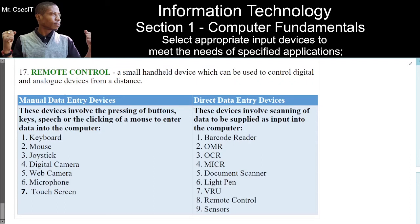Here we have a table where I put manual data entry devices and direct data entry devices into categories. Manual data entry devices: these devices include the pressing of buttons, keys, speech, or clicking of a mouse to enter data into the computer. There are seven of them: keyboard, mouse, joystick, digital camera, web camera, microphone, and touchscreen.